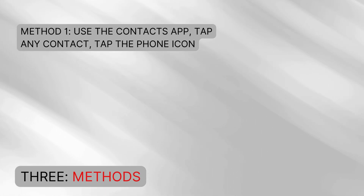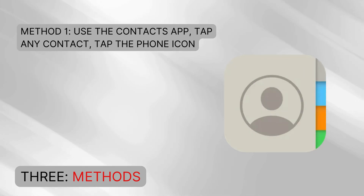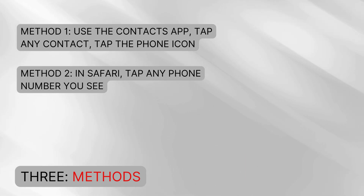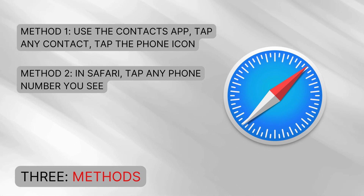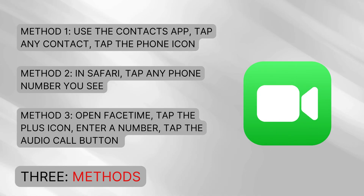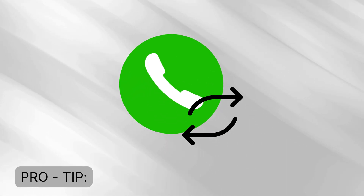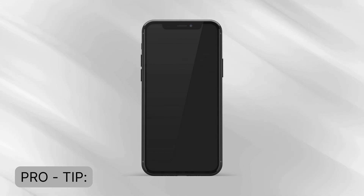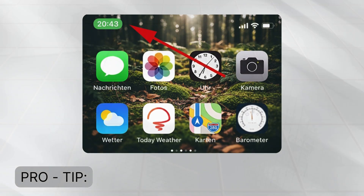To make calls from iPad, there are three methods. Method one: use the Contacts app, tap any contact, then tap the phone icon. Method two: in Safari, tap any phone number you see. Method three: open FaceTime, tap the plus icon, enter a number, then tap the audio call button. Pro tip: to switch an active call back to your iPhone, look for the green bar at the top of your iPhone screen and tap it.